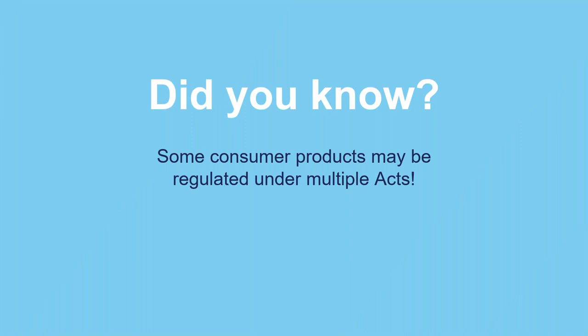Some products are regulated under multiple acts. For example, a paint-by-numbers pullback car contains a small plastic vehicle, a paintbrush, and five pots of paint — that product must meet requirements of LAMA, the Federal Hazardous Substances Act, the toy standards, the CPSA, and the Consumer Product Safety Improvement Act.